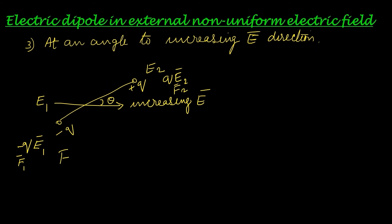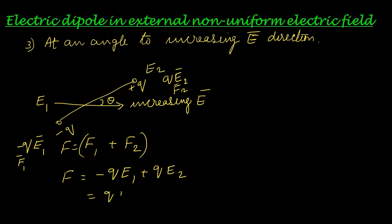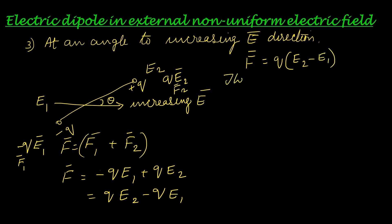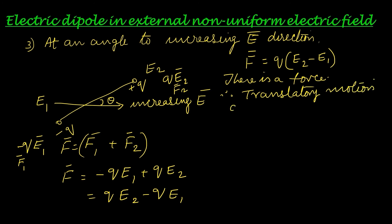The net force is F = F1 + F2 = negative q·E1 + q·E2 = q(E2 − E1). Since E2 is greater than E1, there is a net force acting on the electric dipole. Therefore the dipole exhibits translatory motion. The direction of this motion is along the increasing electric field direction, because F1 is the smaller force acting against it, while F2, the larger force, acts along the direction of the increasing electric field. So translatory motion is along the increasing electric field direction.